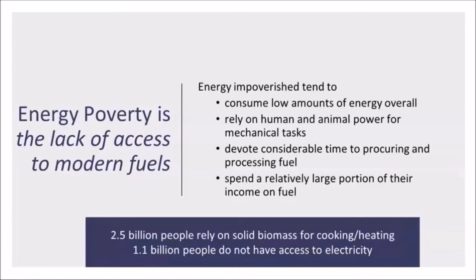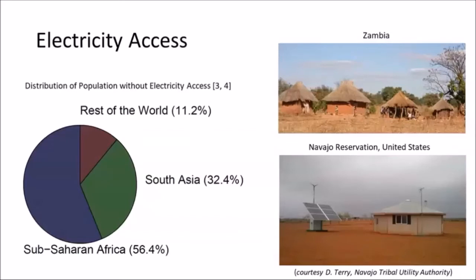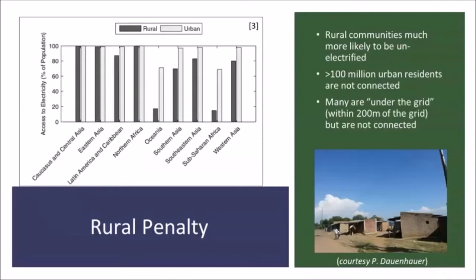Worldwide, there are about 2.5 billion people that rely on solid biomass for cooking and heating, and over a billion who don't have access to electricity. Of those 1.1 billion people, approximately 56% live in Africa — that's about 600 million people in sub-Saharan Africa without access to electricity. South Asia is the other geographic area of the world that really struggles with electricity access. But I'll point out that it's not just so-called developing countries that struggle with this — even in the United States, there are pockets of people without grid access, one example being parts of the Navajo Reservation.